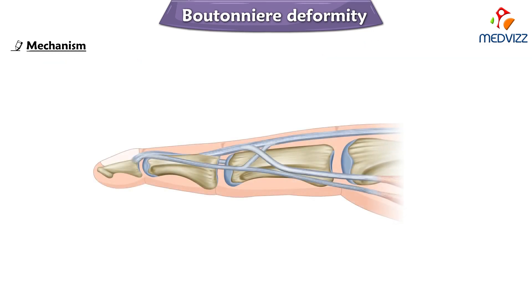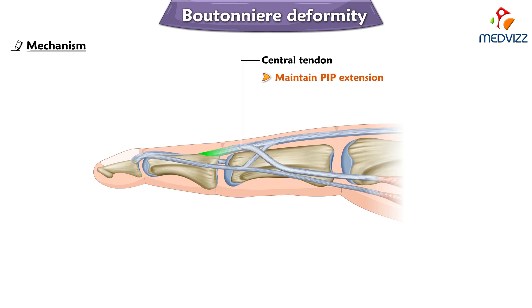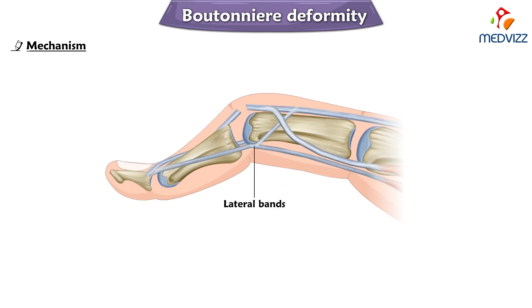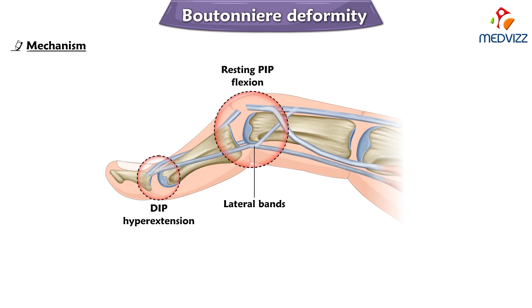The central tendon slip attaches to the dorsal aspect of the middle phalanx, and its main function is to maintain PIP extension and stabilize the extensor tendon apparatus. If the central tendon is disrupted or avulsed — meaning it gets torn off from the base of the middle phalanx — the lateral bands will slip down to the volar position. The actions of the lateral bands and the flexor digitorum profundus are then unopposed, resulting in resting PIP flexion and DIP hyperextension. This is the mechanism behind boutonniere deformity.